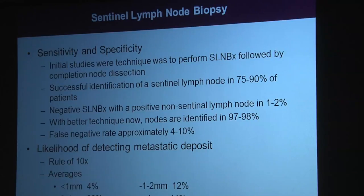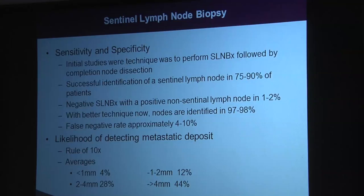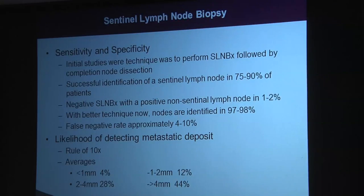Initial studies always followed sentinel lymph node biopsy with a complete axillary lymph node dissection. They would get the sentinel lymph node, send it off, then remove the remaining nodes. We found that in 75% to 90% of patients we could identify a sentinel lymph node. A negative sentinel lymph node with a positive non-sentinel lymph node occurred only about 1% to 2% of the time — validating the use of sentinel lymph node biopsy. This helps 90% to 96% of patients avoid a major surgery they don't necessarily need upfront.